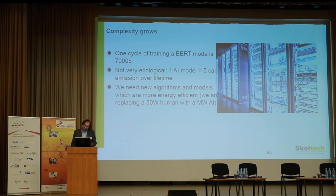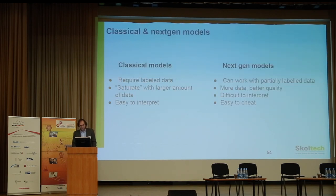The human brain is still much more energy-efficient — only around 30 watts at peak performance. We need new computational architectures beyond von Neumann architecture. The next generation models work with partially labeled and correctly labeled data, more data, more quality. But they have problems: they are very difficult to interpret — you get a black box with an input and an output.